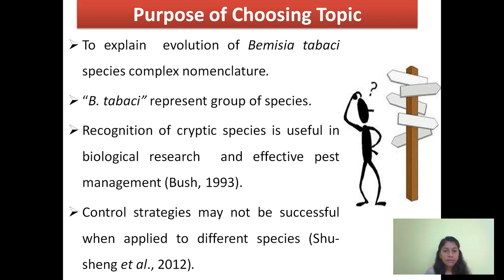For example, all Bemisia tabaci have the capacity to transmit begomovirus, but some species in the genus Bemisia do not transmit. In such a case, the same insecticide application will not give effective results. So recognition of these species is very much useful in pest management and also useful in biological research.